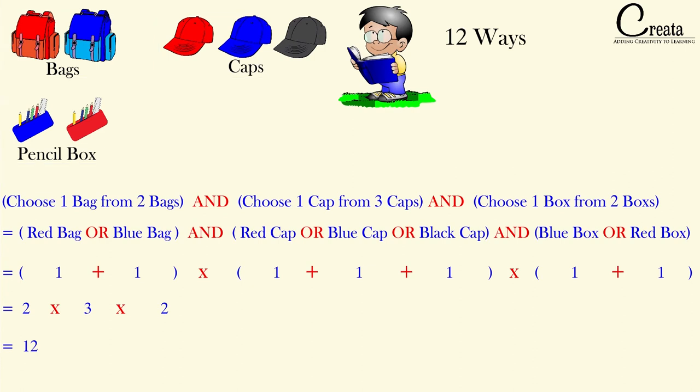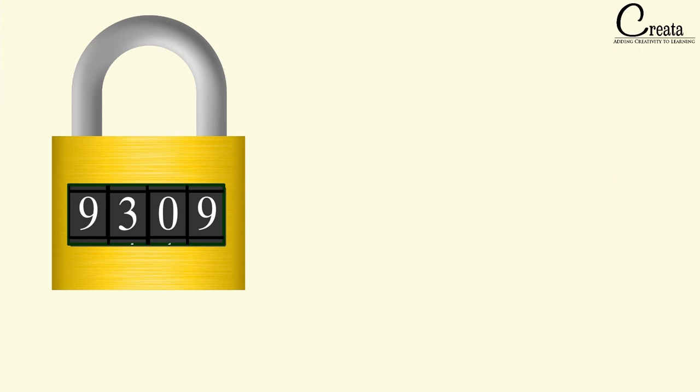Hope you got this fundamental. Let's apply it to our first example — the number lock. We are having a 4-digit number lock system and we forgot the password. We only remember the second digit, which is 3. We have to calculate how many sequences of 3 digits we have to check in order to open the lock.